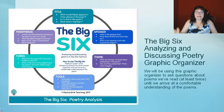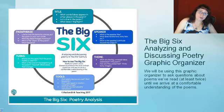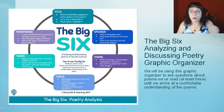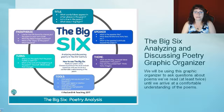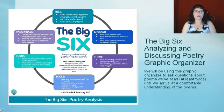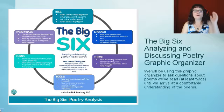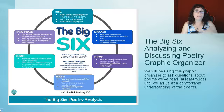The 'Big Six Analysis in Discussing Poetry' graphic organizer is what we will be using in class to ask questions about the poems we've read at least twice, until we arrive at a comfortable understanding of them. It has the title section: what words or ideas appear in other places in the poem? Is it repeated somewhere else? Is it a line in the poem?